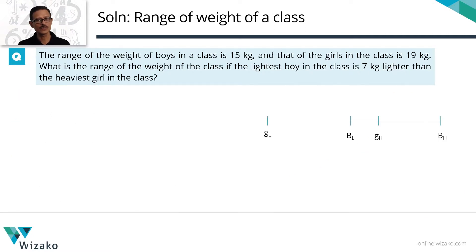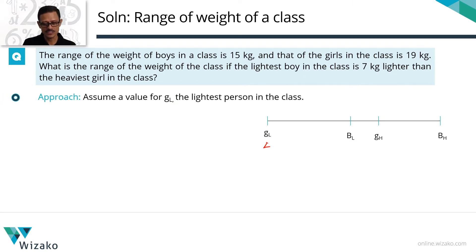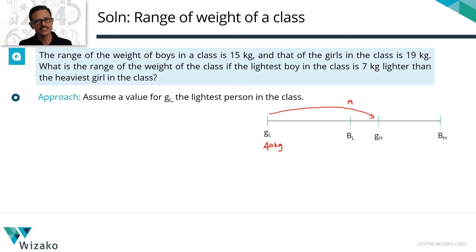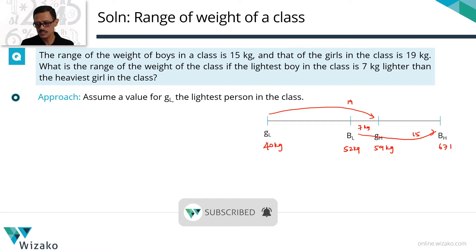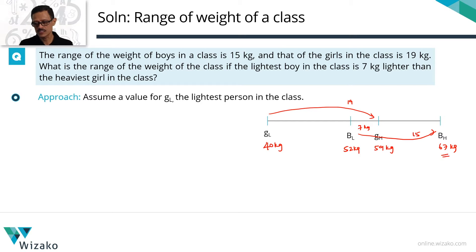Beyond this point, all we need to do is assume a value for the lightest person — the lightest girl. Let's say she weighs 40 kg. The heaviest girl is 19 more: 59 kg. The lightest boy is 7 kg lighter than the heaviest girl: 52 kg. The heaviest boy is 15 more than the lightest boy: 67 kg. The heaviest member is 67 kg and the lightest is 40 kg, so 67 minus 40 gives a range of 27 kg.